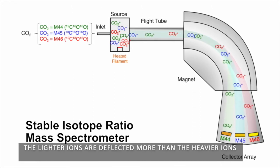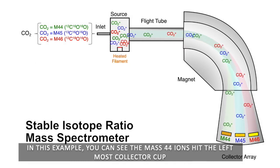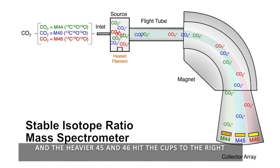The lighter ions are deflected more than the heavier ions. In this example, you can see the mass 44 ions hit the leftmost collector cup, and the heavier 45 and 46 hit the cups to the right.